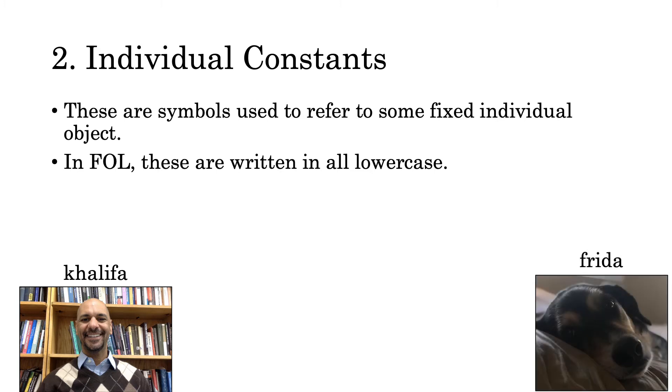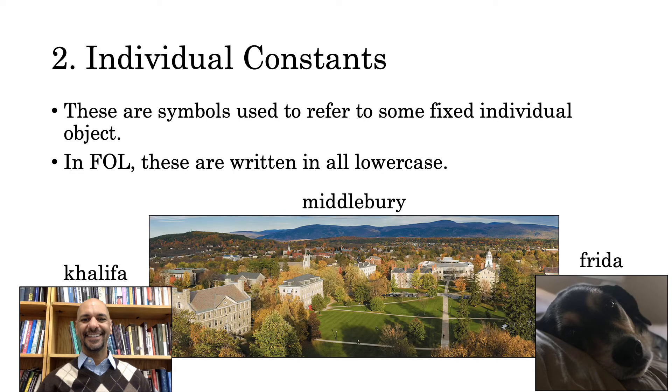Nor are individual constants restricted to the names of people. They might refer to animals, such as my dog, Frieda. Or places, like Middlebury College. Or even weird things like Tetrahedron A, as you'll see in your homework.